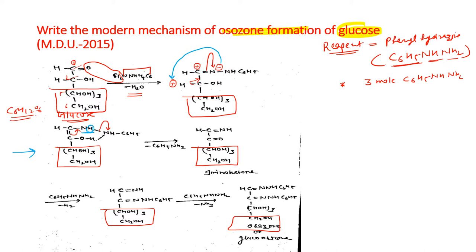The carbon positive charge is neutralized. C6H5NH2 is removed from here. What remains is a carbon-carbon double bond. The double bond shifts up, and on the second carbon, a ketone form also develops, as the carbon-carbon double bond shifts toward C=O.